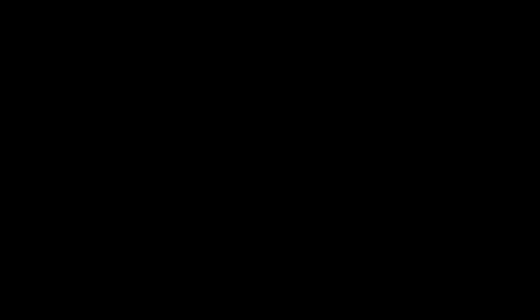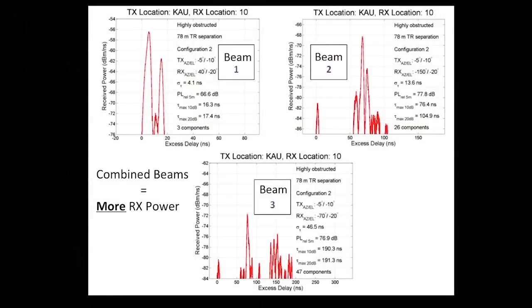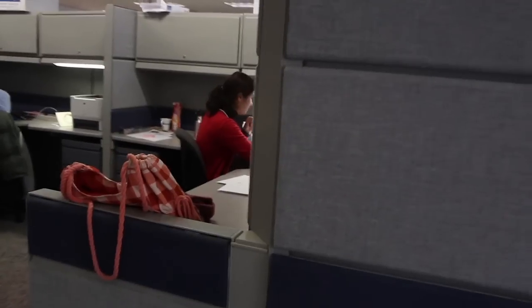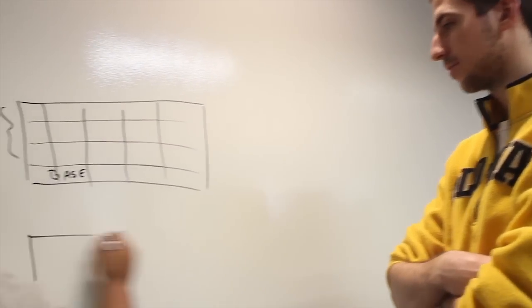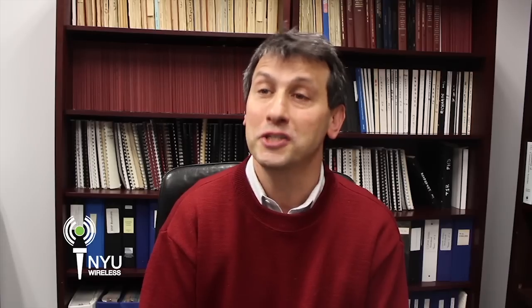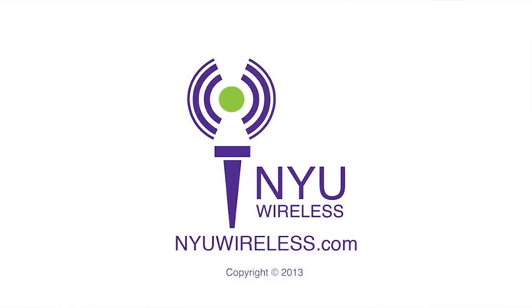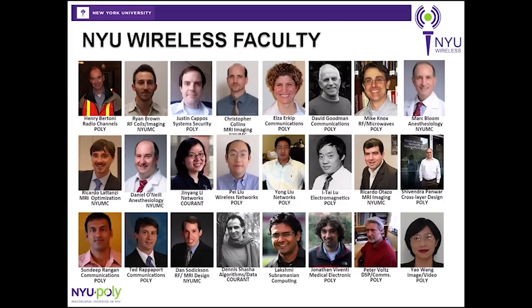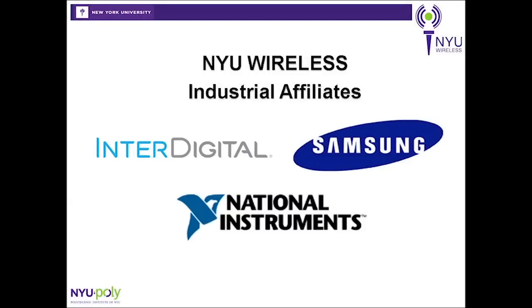Understanding the channel allows researchers and engineers to then begin building the infrastructure to provide multi-gigabit per second data rates to mobile phones in urban environments using highly directional, steerable antennas. NYU Wireless researchers at NYU and NYU Poly are leading the way in this new future. It is a very exciting future.